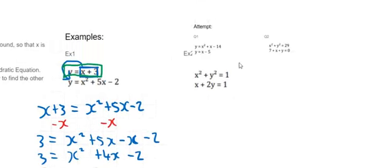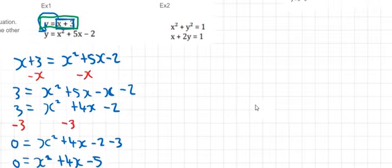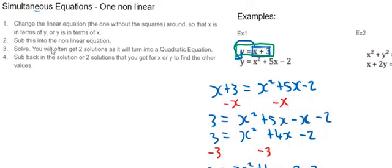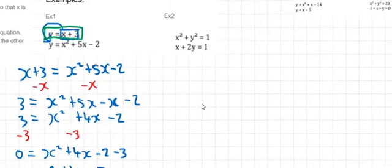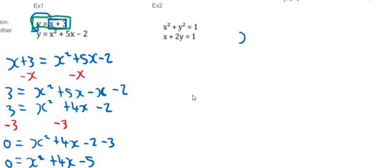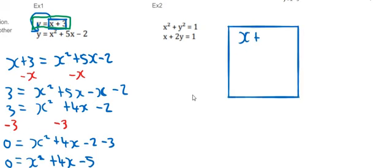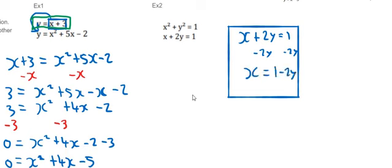The second example is a little bit trickier — this is where the first step comes into play. We need to change the linear equation so that x is in terms of y or y is in terms of x. Taking x plus 2y equals 1, it works out easier to let x equal something — so I subtract 2y from both sides to get x equals 1 minus 2y.